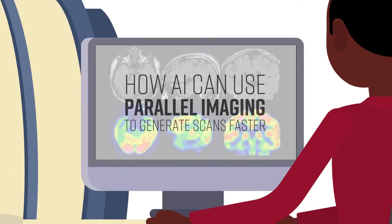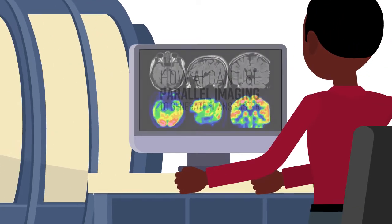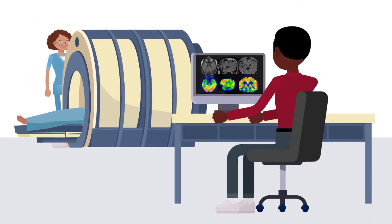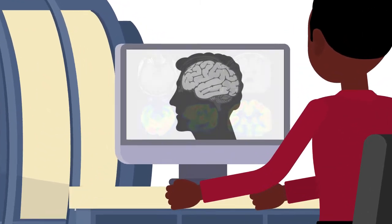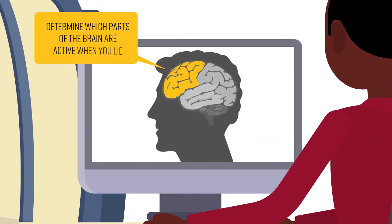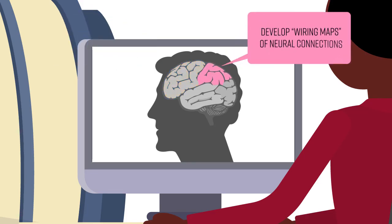Engineers are also leveraging signal processing in new, innovative MRI techniques that study functions of the brain. As these techniques evolve, engineers can use these signal processing techniques to determine which parts of the brain are active when you tell a lie, develop wiring maps of neural connections in the brain which will aid surgeons in brain tumor removals.